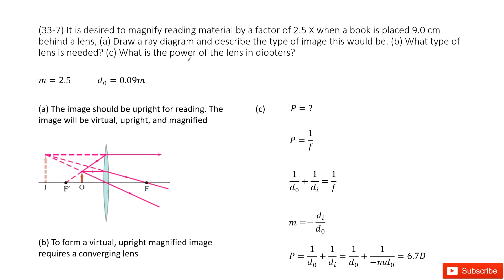So there you can see we have a lens. It can magnify reading materials. If we want to make the reading materials larger and we read it, so it must be upright for reading, right? So the image should be upright for reading. The given quantity is magnification and the object distance d0.